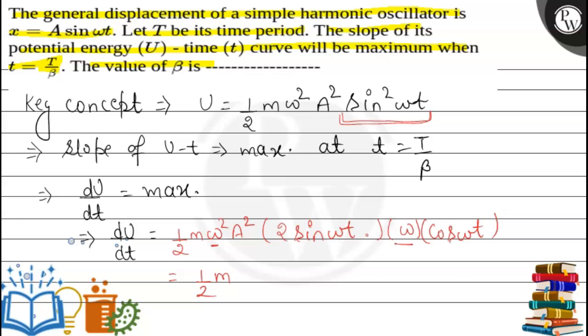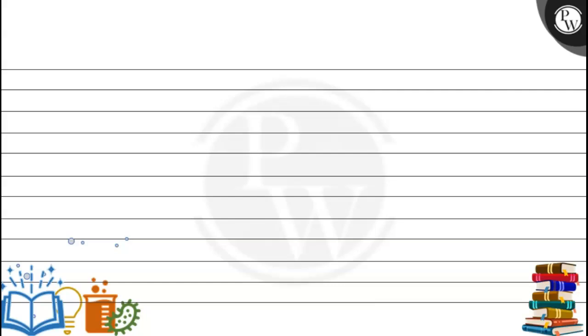This becomes 1/2 m ω² and here is ω. This becomes 1/2 m ω³ A² 2 sin ωt cos ωt. And as we know that the quantity 2 sin ωt cos ωt is a mathematical identity which is equal to sin 2ωt. Now we put this value, then dU/dt becomes equal to 1/2 m ω³ A² sin 2ωt.